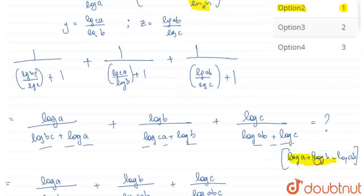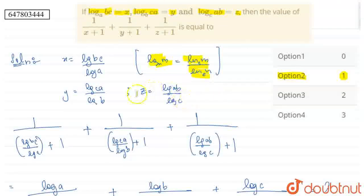So basically two properties are used in this: first is the base change property and second is your addition property. If you know both these properties and you understand the rearranging, which comes with practice,